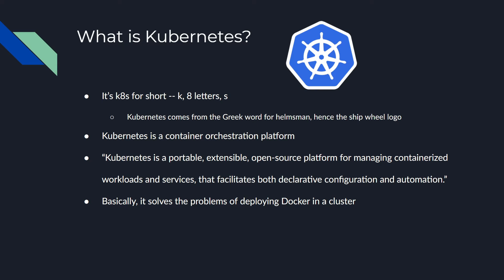That's why Kubernetes exists. Kubernetes is often abbreviated K8s — it's K, eight letters, then S, which is wonderfully lazy. It means 'helmsman', which is why there's the ship wheel logo. It's an orchestration platform — orchestration basically means managing stuff across a cluster and solving all the problems that clustering creates. Kubernetes is a platform for doing this for you.